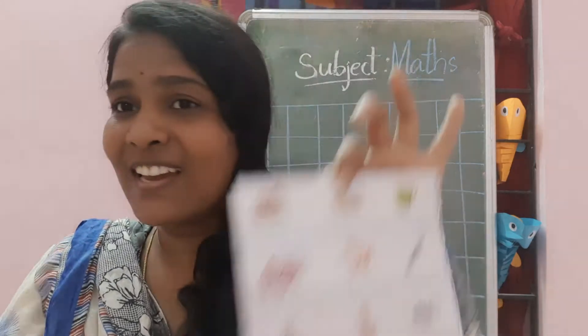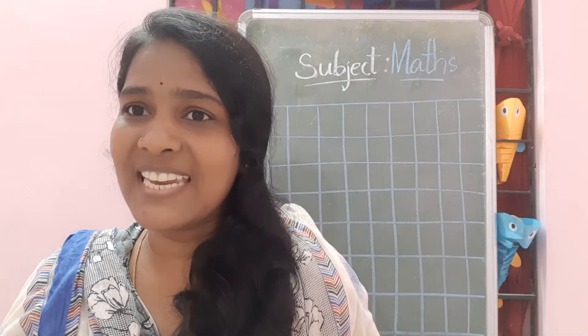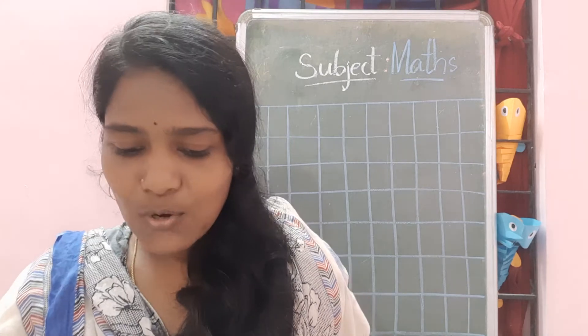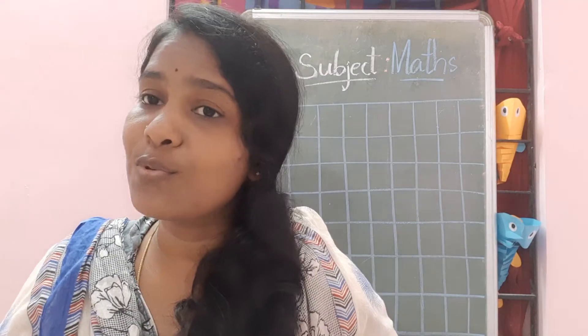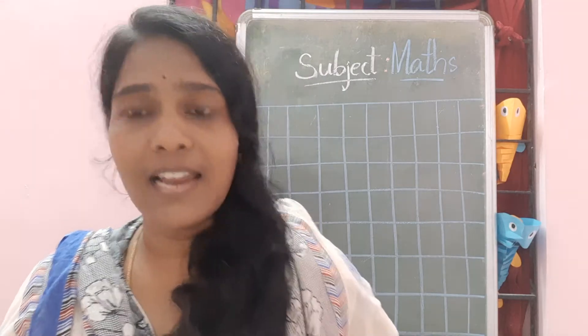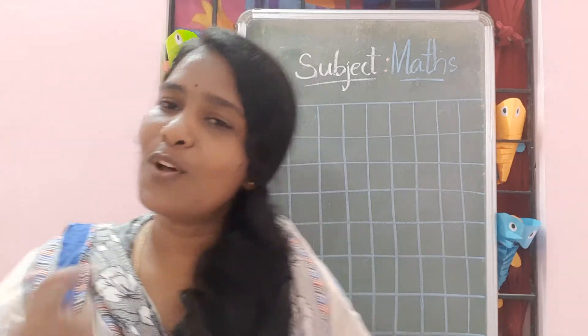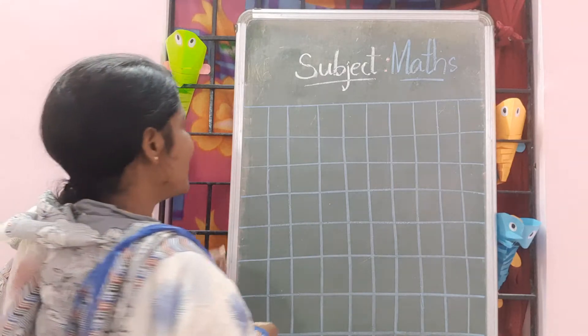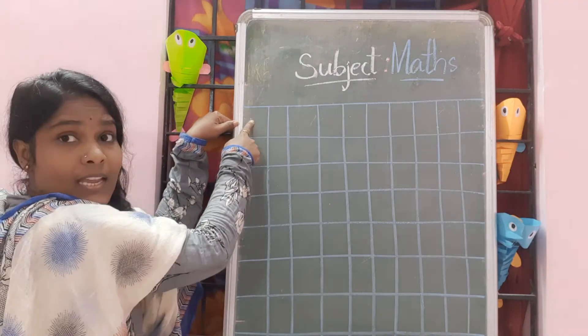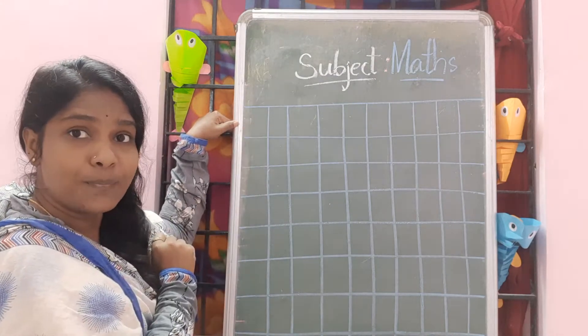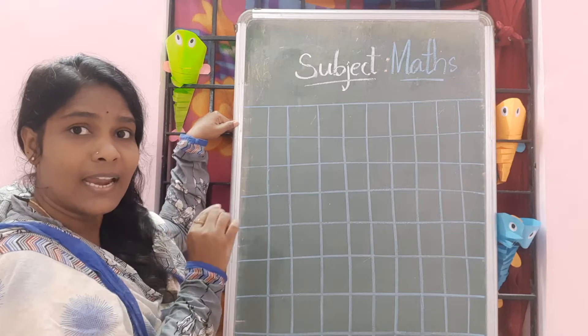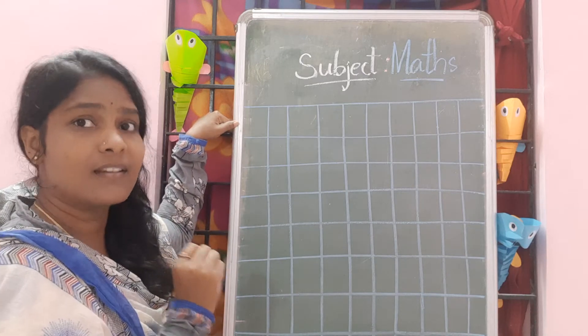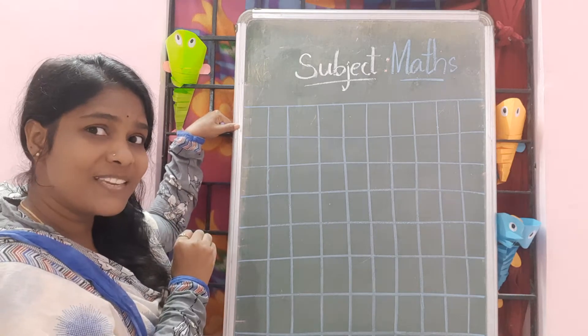Okay, today I am going to learn how to write the number name of 18. Look at the board. I will show you how to write, how you need to read and write — I will tell you today. You all just follow me. Come on, write down. Be ready with your notebook and take one sharp pencil. Write along with me.